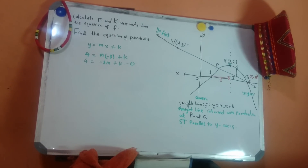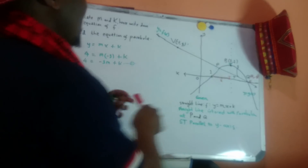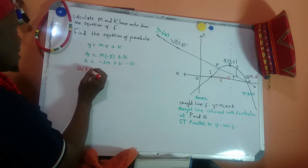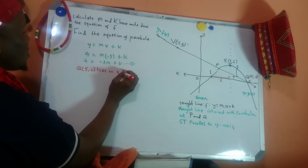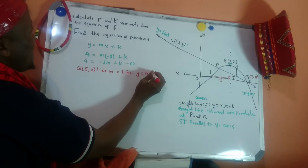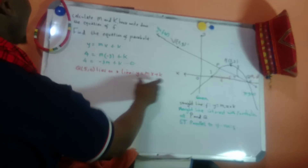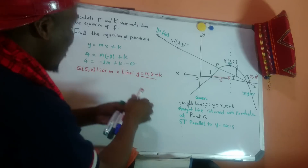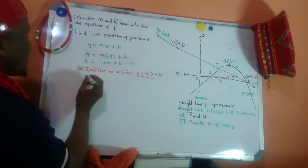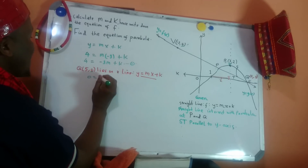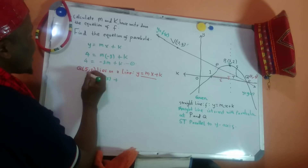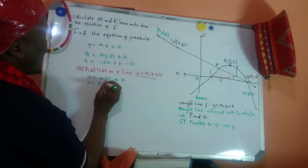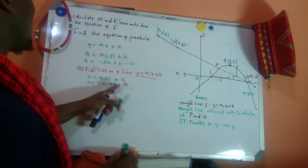Now I have another coordinate — Q, which is (5, 0). Q also lies on the line y equals mx plus k. So I take those coordinates and substitute them in: y equals 0, x equals 5. So: 0 equals m times 5 plus k. Simplifying: 0 equals 5m plus k. Let me make k the subject from this second equation.